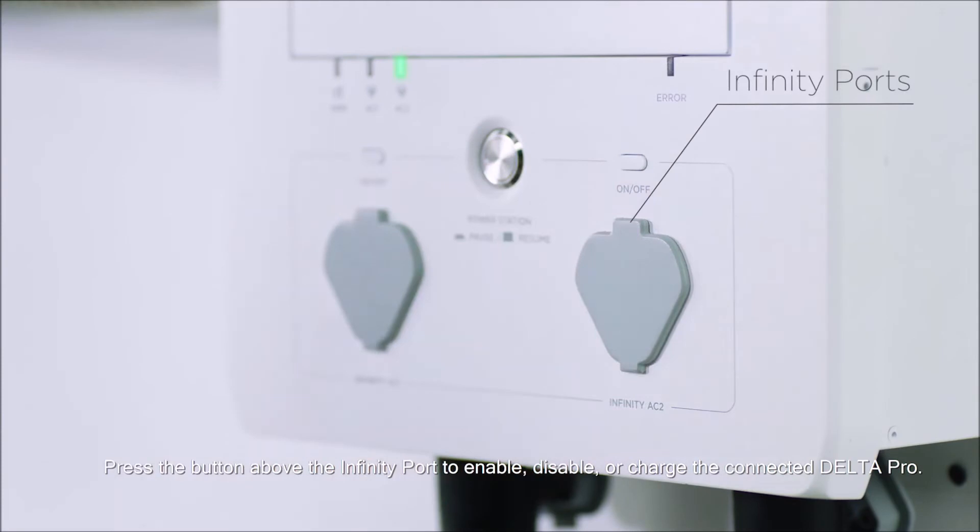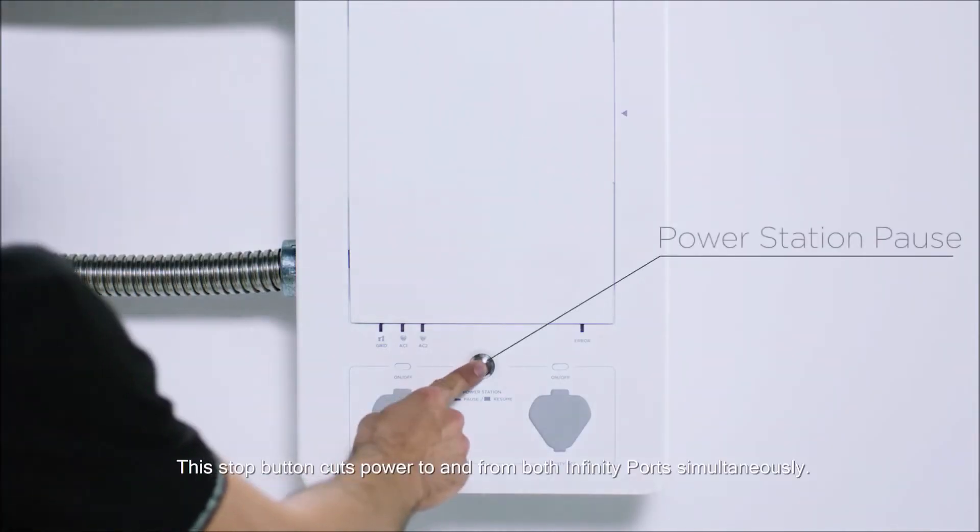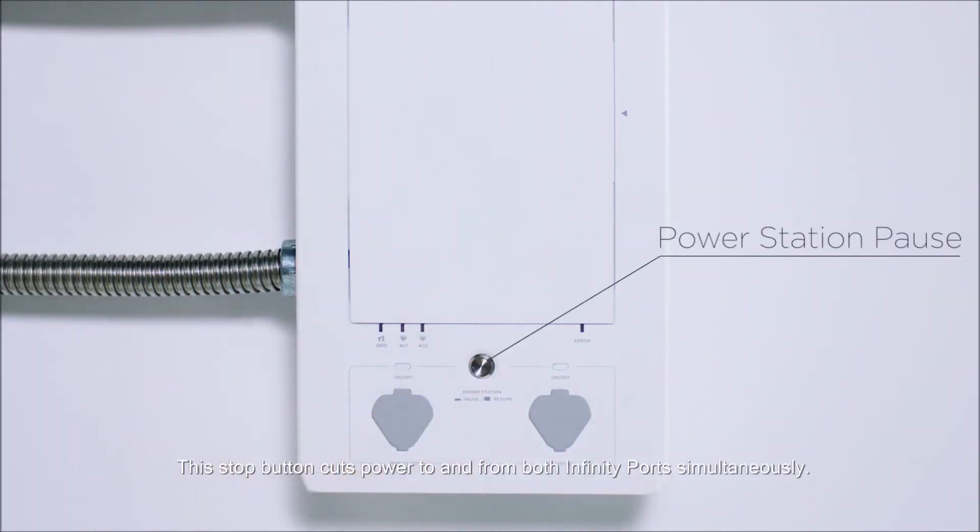Press the button above the infinity port to enable, disable, or charge the connected Delta Pro. This stop button cuts power to and from both infinity ports simultaneously.